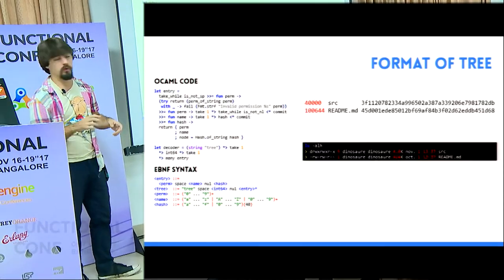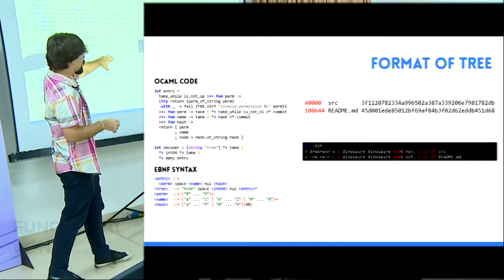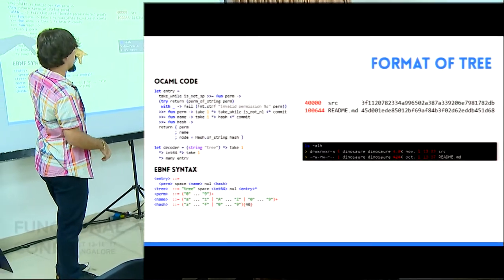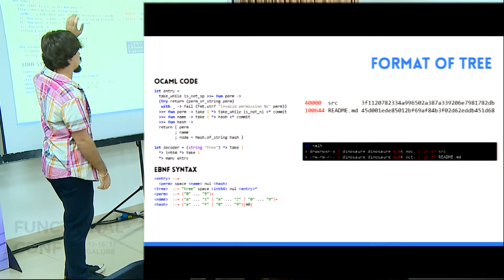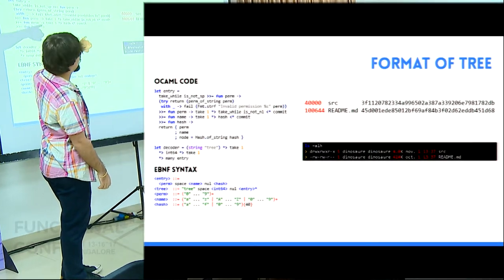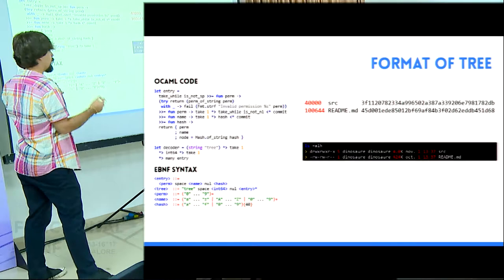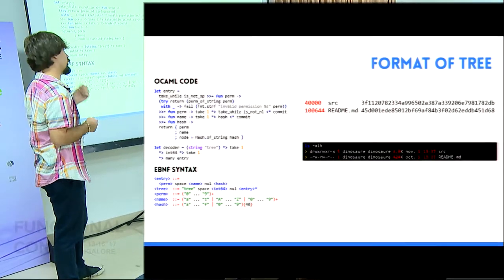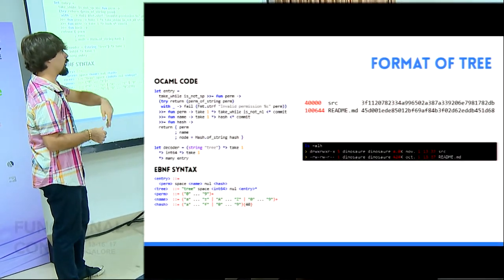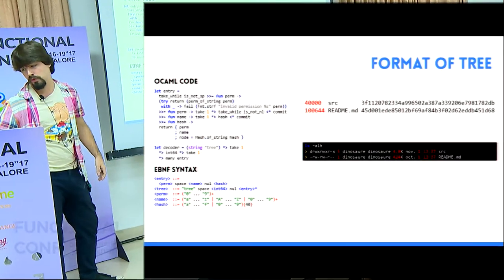Here is a little example. We have one directory and one file, and from this we can have this tree, so with the permission we can recognize if it's a directory or file, and afterwards the name and the hash identifier.